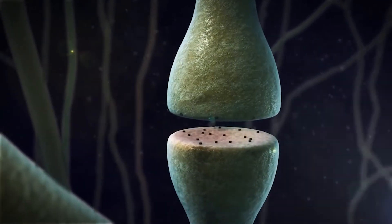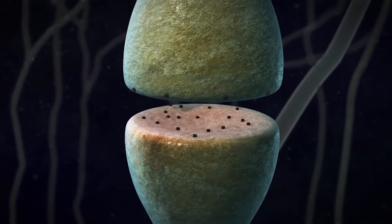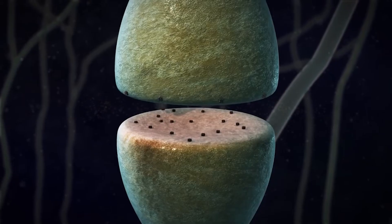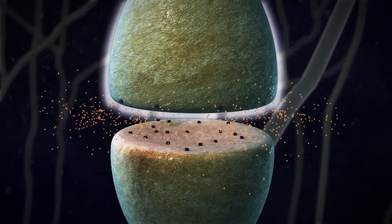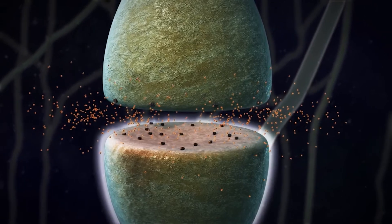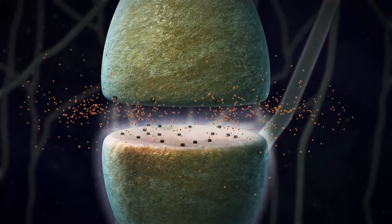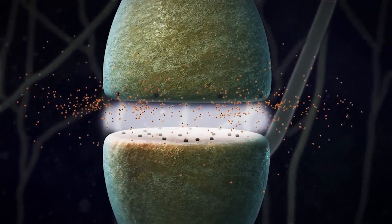So, when the action potential reaches the axon terminal, the end of the neuron, what it does is activate the release of chemicals from storage sacks known as vesicles. These chemicals flood into the synaptic cleft, aka the gap, and diffuse their way across to the next neuron.